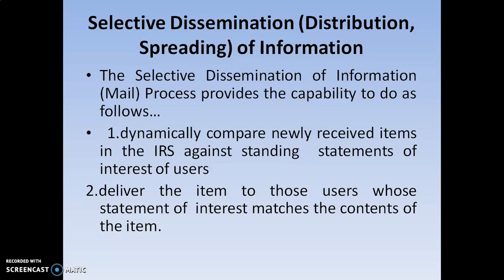The best example of selective dissemination is mailing. Newly received items are compared with available items, and whenever a perfect match is found, those items are delivered to the respective user who initiated the search. This feature is called selective dissemination.